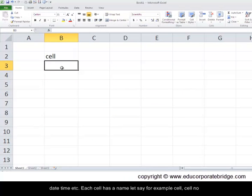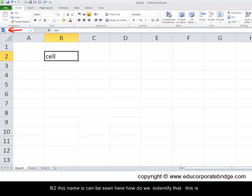Each cell has a name. Let's say for example the cell number B2. This name can be seen here. How do we identify that this is cell B2? As you can see it's highlighted. Highlighted one is B here and the highlighted one is 2 here. So you can clearly understand that you are at cell B2.